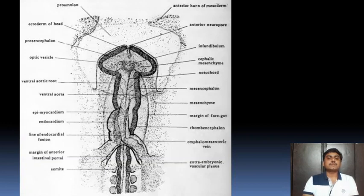Here you find the notochord, aortic root, and optic vesicle. This is the total head process — the prosencephalon and the ectoderm of the head. This is the growing embryo.